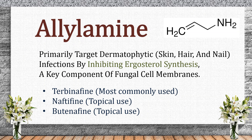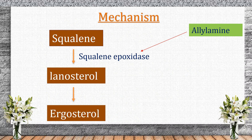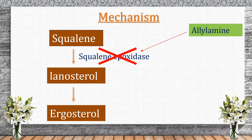Allylamines are a class of antifungal drugs that primarily target dermatophytic infections of skin, hair, and nails by inhibiting ergosterol synthesis. Examples include terbinafine (most commonly used), naftifine (topical), and butenafine (topical). Allylamines inhibit squalene epoxidase, an enzyme in the fungal ergosterol synthesis pathway, preventing conversion of squalene to lanosterol. This leads to depletion of ergosterol, weakening the fungal cell membrane, and toxic accumulation of squalene, which is lethal to fungal cells. Allylamines have a fungicidal effect against dermatophytes and a fungistatic effect against some yeasts.